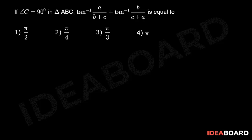If angle C equals 90 degrees in triangle ABC, then tan inverse of A/(B+C) plus tan inverse of B/(C+A) equals the given angle. Since C equals 90 degrees and A, B, C are the sides of the triangle, we have C² = A² + B². Consider this as equation number 1.